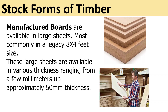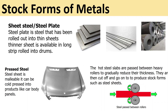Stock forms of metals. Steel sheet or steel plate is steel that has been rolled out into thin sheets. Thinner sheet is often supplied rolled into large drums. Pressed steel is malleable, so it can be cold pressed into products like car body panels — you can see a car body panel pressed out of mild steel sheet. Hot steel sheets are passed between heavy rollers to gradually reduce their thickness and produce these stock forms.